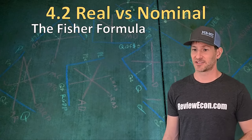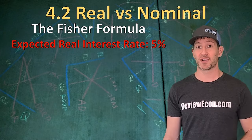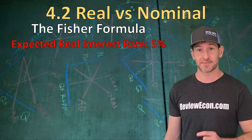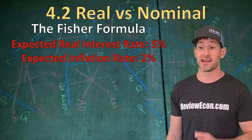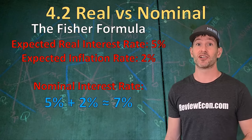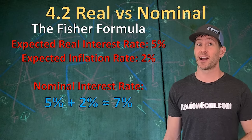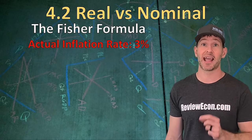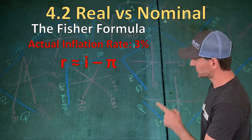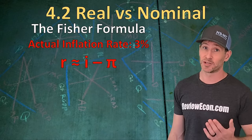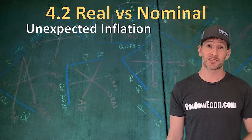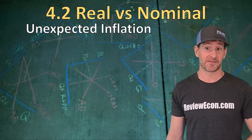Here's an example to put that formula into use. Let's say the bank wants a real interest rate of 5% — that's the expected rate of return they hope to achieve. At the same time, the expected rate of inflation is 2%. Add those together and that tells us the nominal rate of interest this bank will charge is 7%. We can also flip this formula around. Let's say the actual rate of inflation ends up being 3% instead of 2%. We take the nominal rate of interest that the bank charges, subtract the 3% actual inflation rate, and that gives us an actual real interest rate of only 4%.